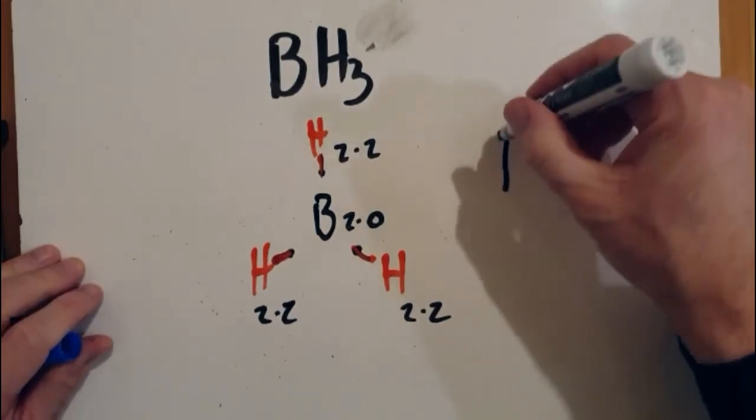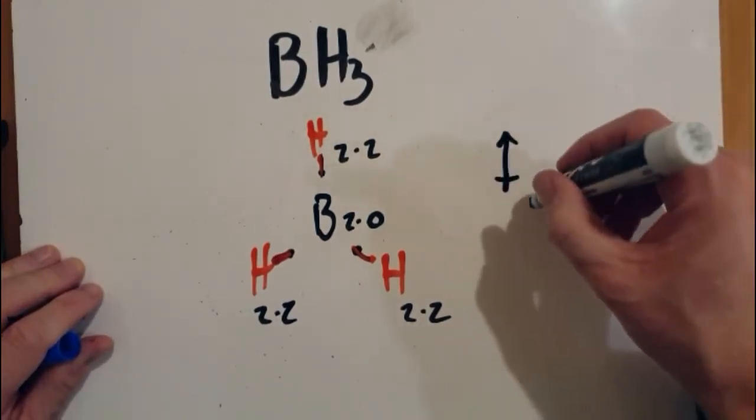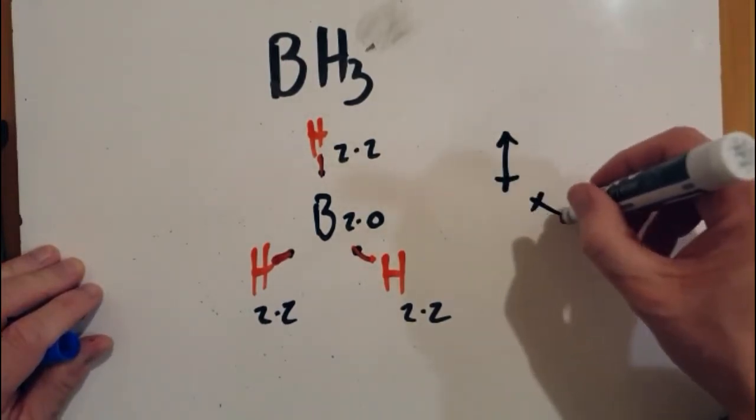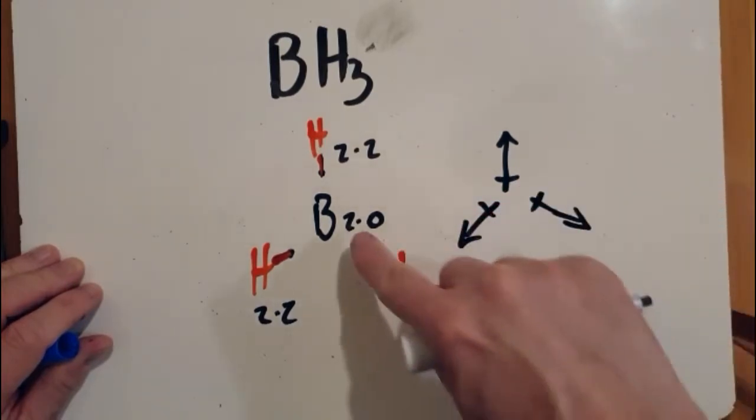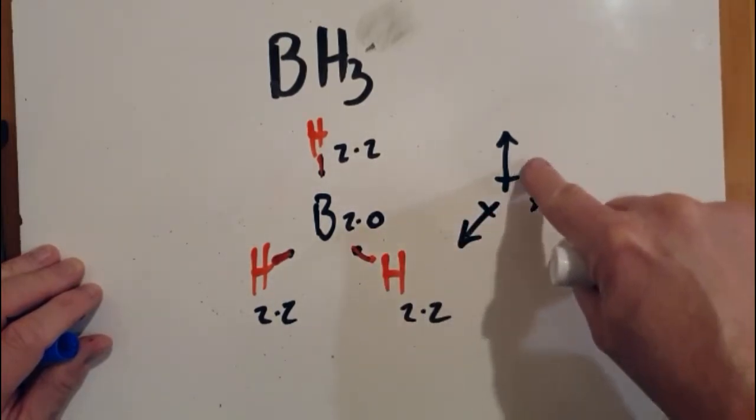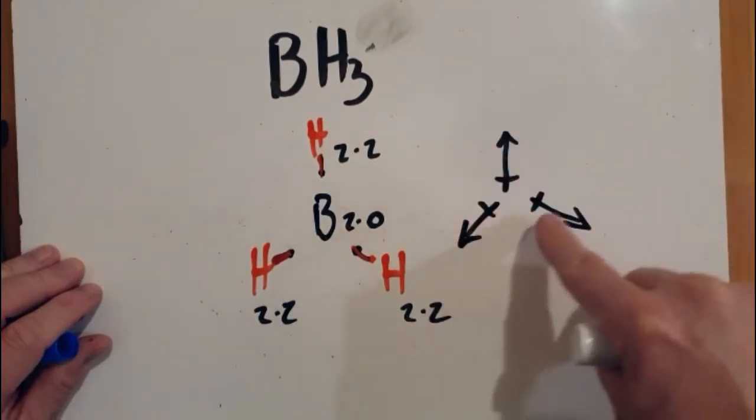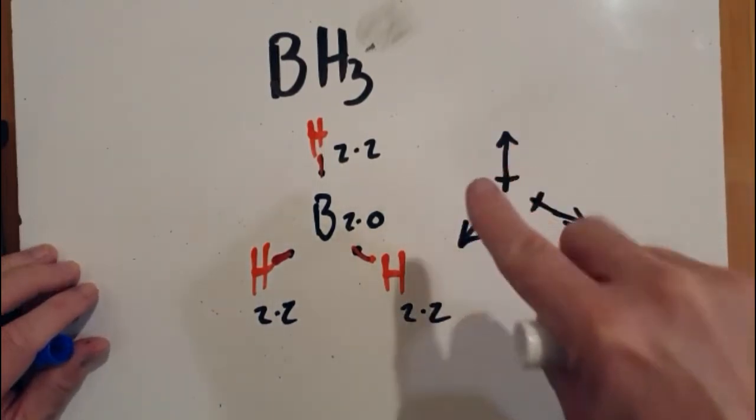If you wanted to be fussy about it, you could show these dipoles here for the bonds. And since the bond dipoles cancel overall, if these were vector arrows, you add them up, they just cancel to zero. You can say that the molecule itself is also nonpolar.